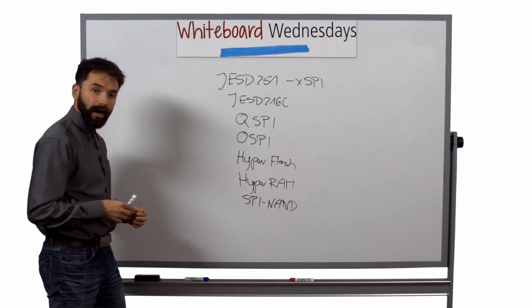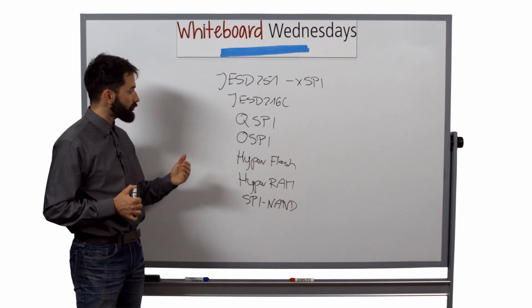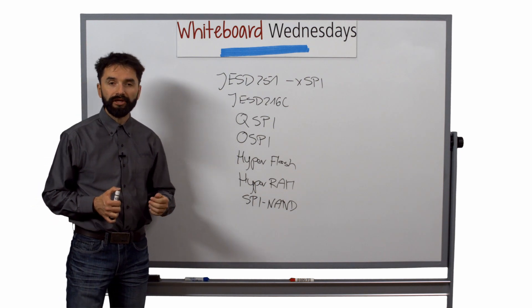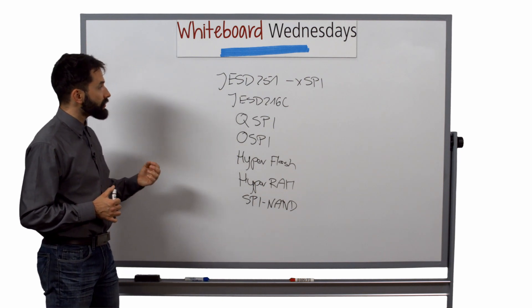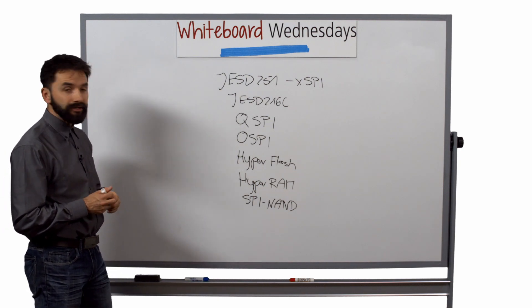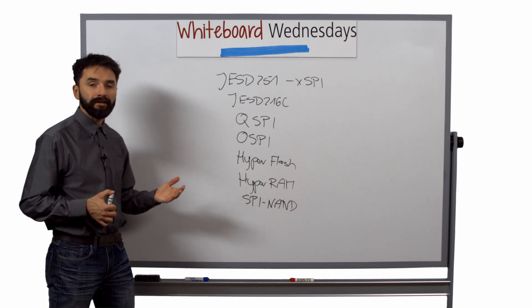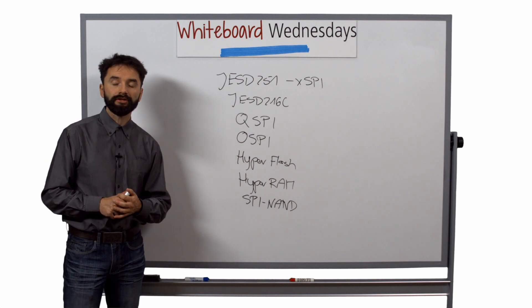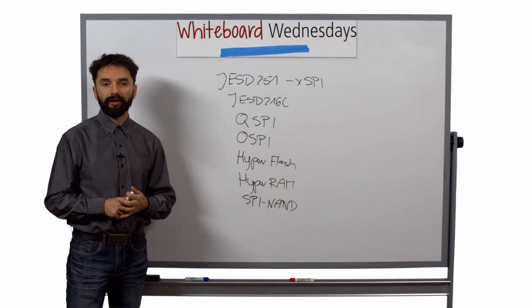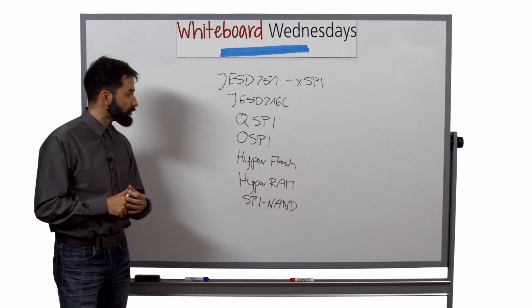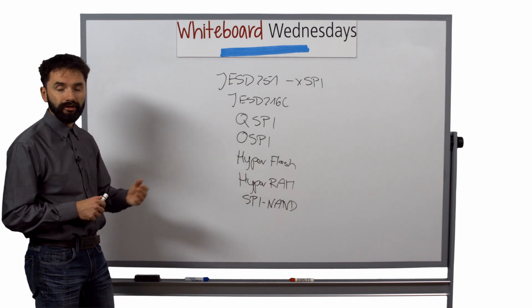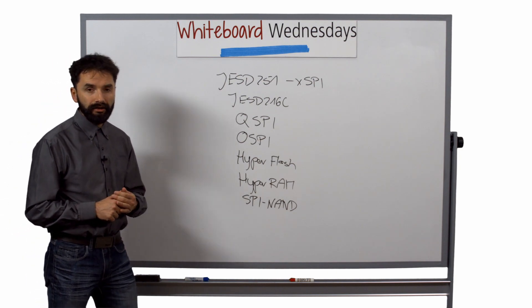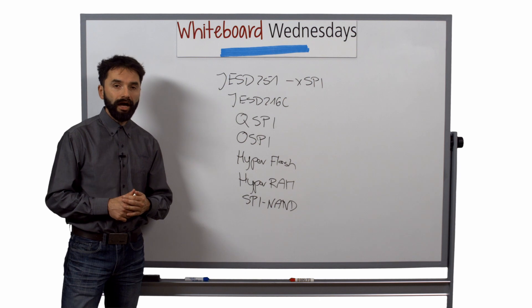And the other improvement over the QSPI and OSPI IPs is that the XSPI has its own built-in DMA, so that it offloads the users, the application designers, from a lot of software development and facilitates the use of XSPI in more automated applications.